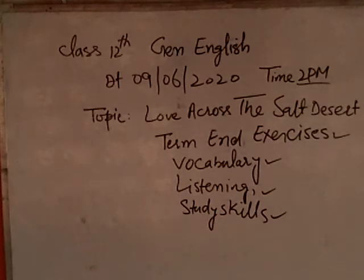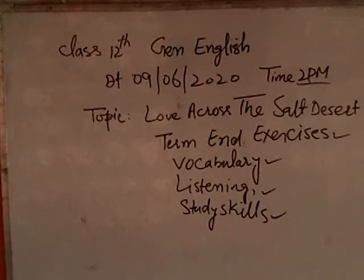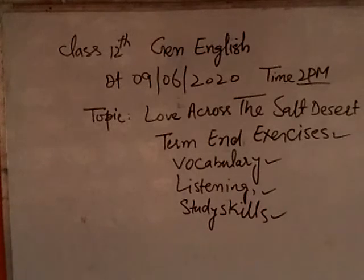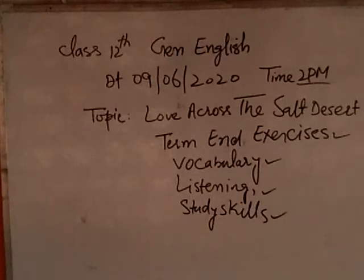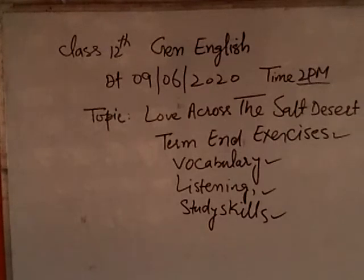Next question: When he heard about his son's disappearance, what was Aftab's first suspicion? His first suspicion was that his son Nigel had made a foray across the Rann of Kutch into Sindh, Pakistan.